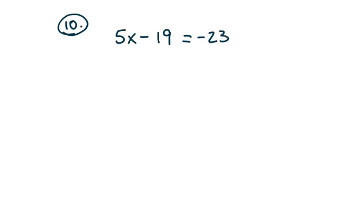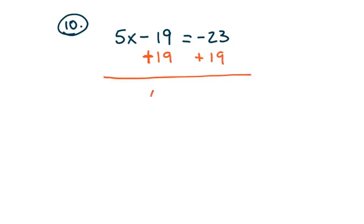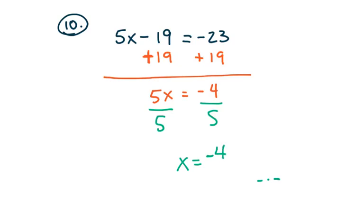Pause the video and have a go at this next one. The natural way is to add 19 to both sides, giving 5x equals negative 4, then divide through by 5, so x equals negative 4 fifths.